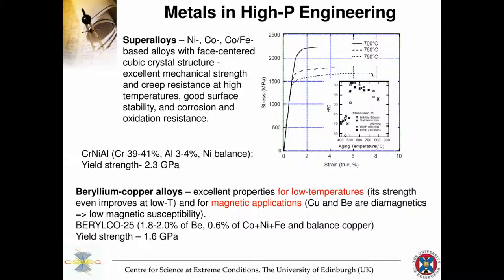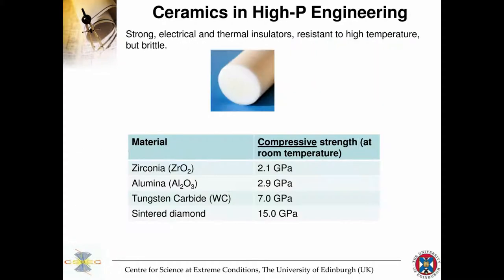Super alloys are primarily nickel and cobalt-based with cubic crystal structure and excellent mechanical strength. They're slightly weaker than Maraging steels but generally less magnetic — for example, chrome-nickel-aluminum. They're useful in pressure cell construction. Beryllium copper is even weaker but better in terms of magnetic properties due to low magnetic impurities, making it commonly used for pressure cells in magnetic applications and for making gaskets in diamond anvil cells used for magnetic measurements. It has a yield strength of 1.6 GPa.